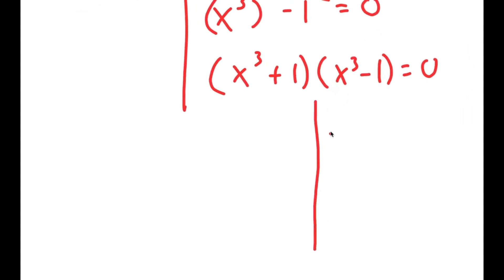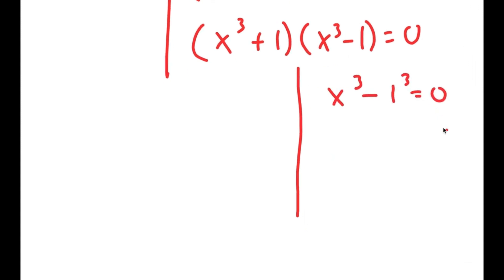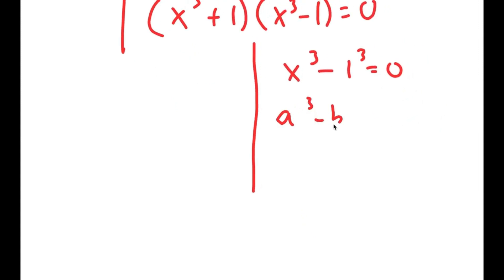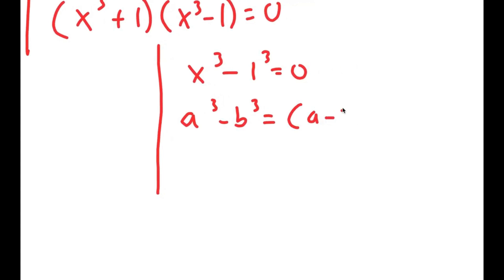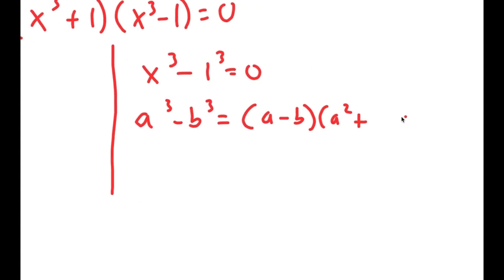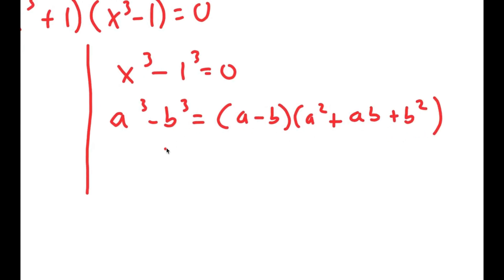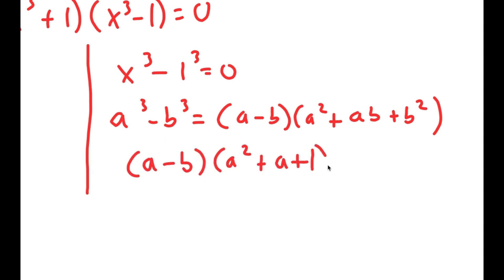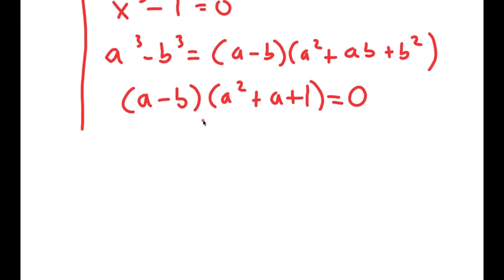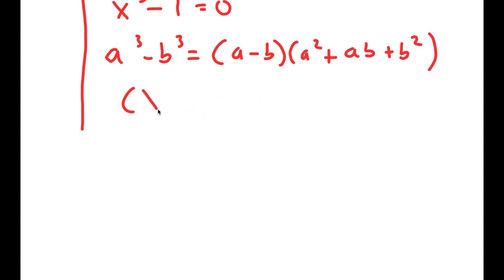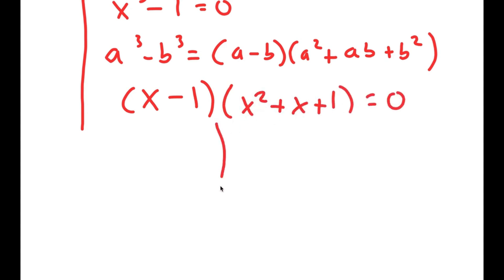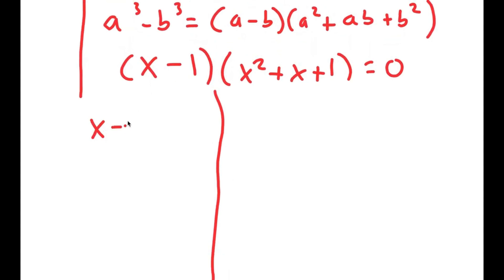For x to the power of 3 minus 1 equals 0, I'm going to rewrite this as x to the power of 3 minus 1 to the power of 3 equals 0, so I can use the property a to the power of 3 minus b to the power of 3 equals a minus b times a squared plus ab plus b squared. This turns into x minus 1 times x squared plus x plus 1 equals 0, which gives me two more equations: x minus 1 equals 0 and x squared plus x plus 1 equals 0.